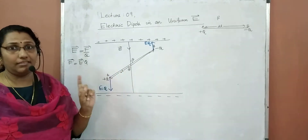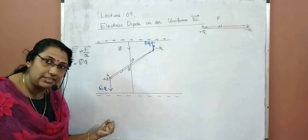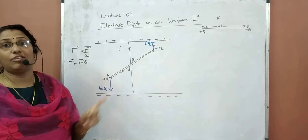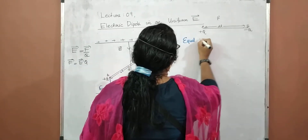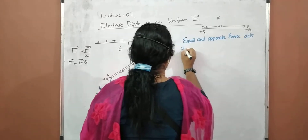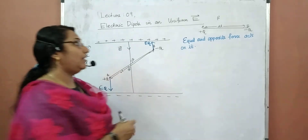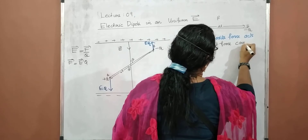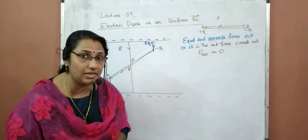Plus q is attracted toward the negative plate, and minus q is attracted toward the positive plate. The forces are equal but in opposite directions. Therefore, the net force acting on the dipole becomes zero.